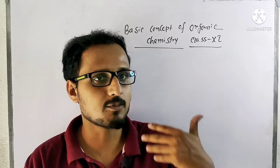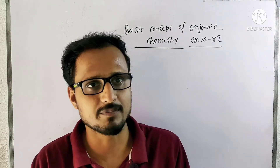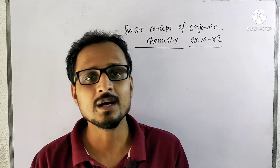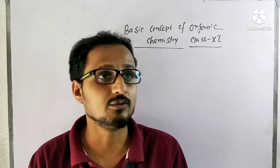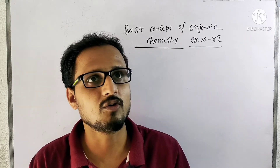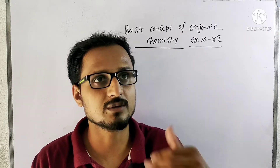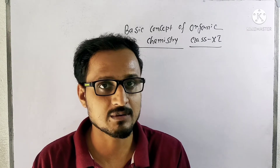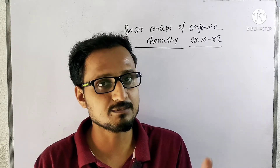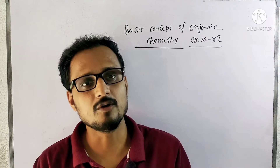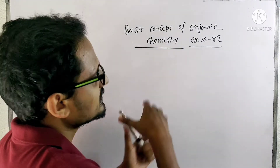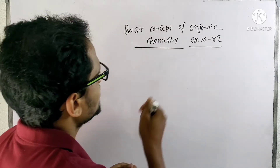Last day I completed up to the catenation property, and I told that carbon will show the catenation property. Now how compounds will form, what bonds can form, what is the sigma bond, what is the pi bond, and how to calculate the sigma and pi bonds in organic compounds — we will discuss here in this next video.